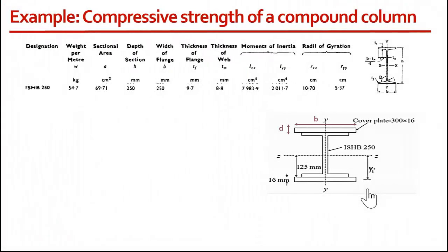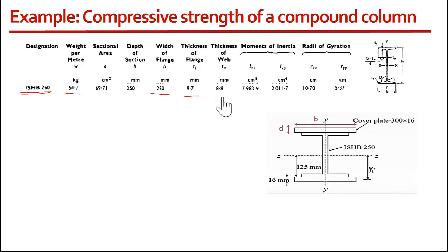Now we need to find the properties of ISHB 250, which can be found from SP6 — the handbook. A snapshot from SP6 shows ISHB 250 with different properties such as weight per meter, flange width, flange thickness, web thickness, moment of inertia, and radius of gyration.